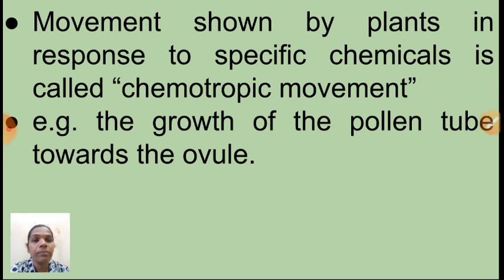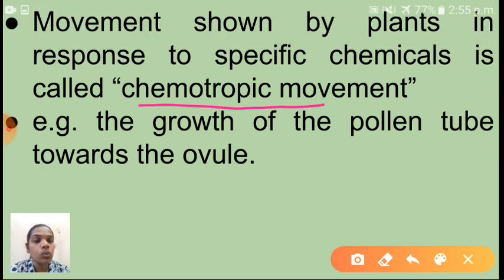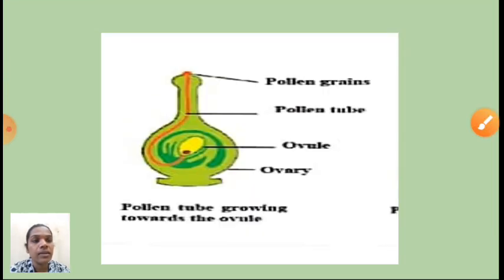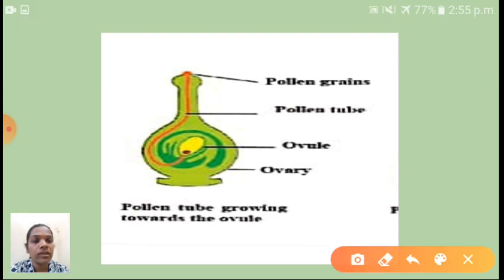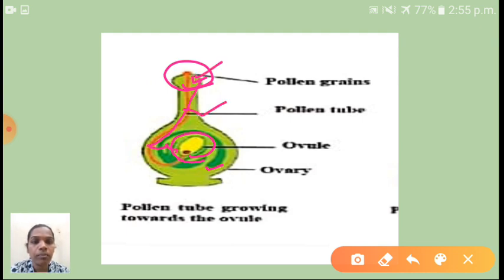Movement shown by plants in response to specific chemicals is called chemotropic movement. For example, the growth of the pollen tube towards the ovule. After pollination, the pollen tube grows from the pollen grains towards the ovule because inside the ovule there are specific chemicals. So that pollen tube grows towards the chemical, and this movement is called chemotropic movement.